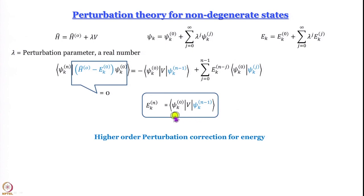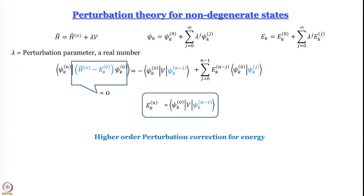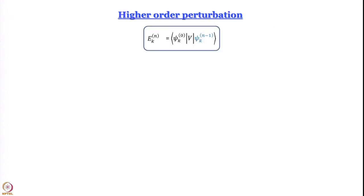The problem with this expression is that it means you have to go in steps. It is great that you have one unperturbed wave function in the integral, but the other one is the (n-1)th wave function. So in order to find out a particular correction term you must have first worked out the (n-1)th correction term to the wave function in order to find out the nth correction to the energy. That is not too happy a situation and we want to see whether we can derive an expression which can do better than this.